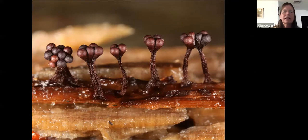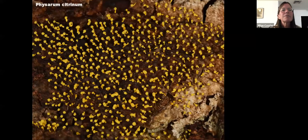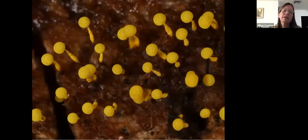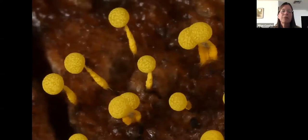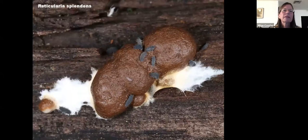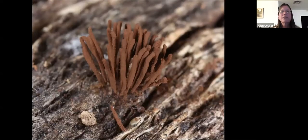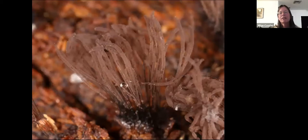I want to reiterate that my identifications are presumptive, not definitive — to get a definitive ID you'd need to look at the microscopic spore structures. Reticularia splendens — I think that's a misnomer, it doesn't look very splendid to me, but to those Collembola feeding on it, probably does. Stemonitis starts out looking like this, and after a short while it looks like chocolate fingers — that's what people commonly call it. Then after all the spores release, they look like little feathers.